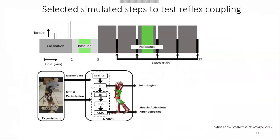A different portion of the experimental protocol was used in the simulation. It starts with an initial calibration period to estimate the torque which results in desired peak knee flexion angle for the subject, followed by a baseline condition where participants wear the device but no assistance is applied. This is continued with an assistance period where subjects were provided appropriate knee flexion assistance determined from the initial calibration period. We simulated 15 steps from baseline and 30 steps from the assistance period for each participant. We used peak simulated RF fiber stretch velocities and the following RF activations as an indicator of reflex initiation.